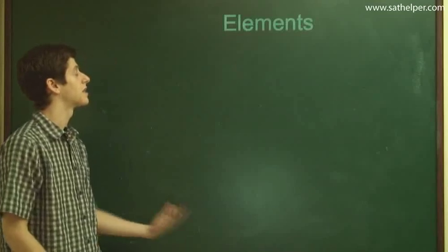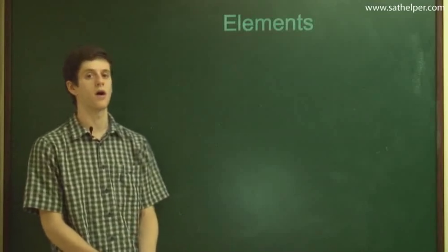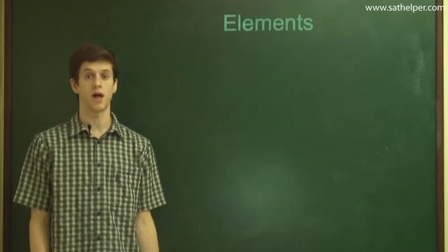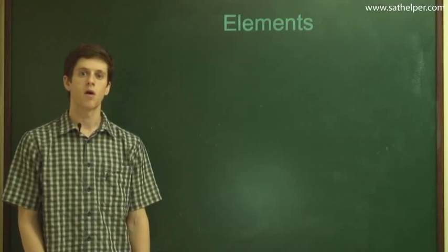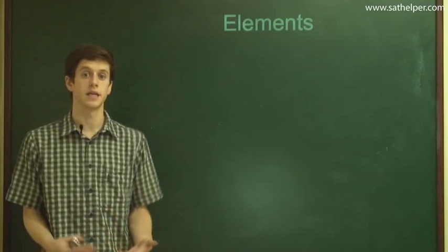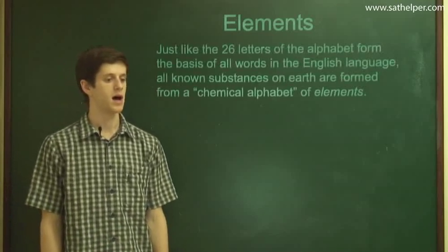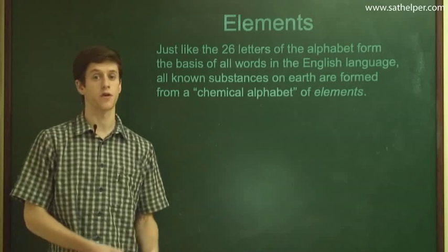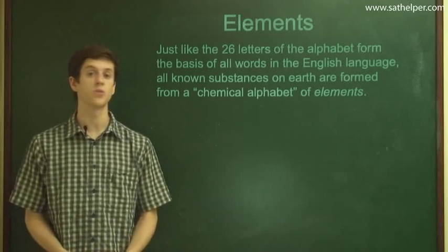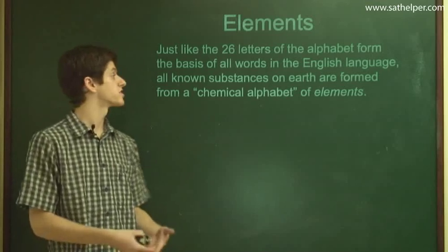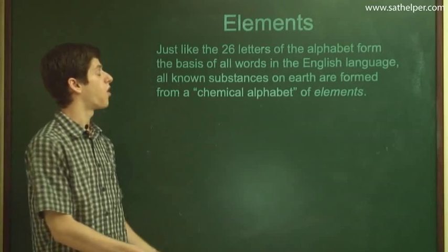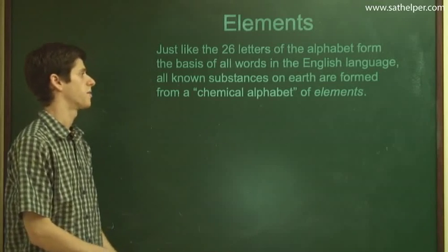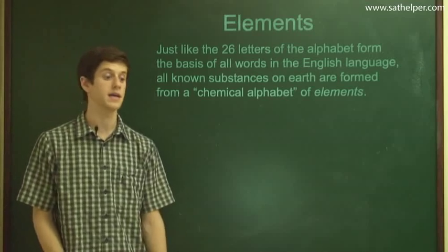Elements and compounds. Elements are the fundamental building blocks of matter, sort of all the different varieties that an atom can come in. Just like the 26 letters of the alphabet from which we can construct any word in the English language, we can construct any molecule from all the various elements in the periodic table. They're sort of like a chemical alphabet.